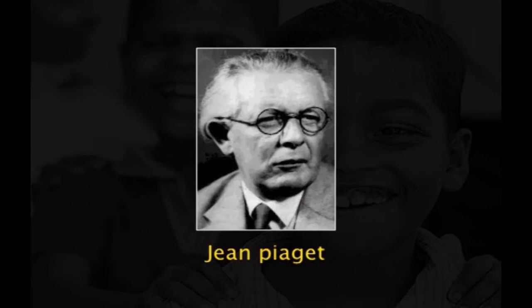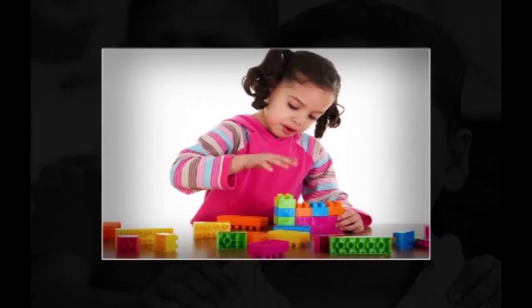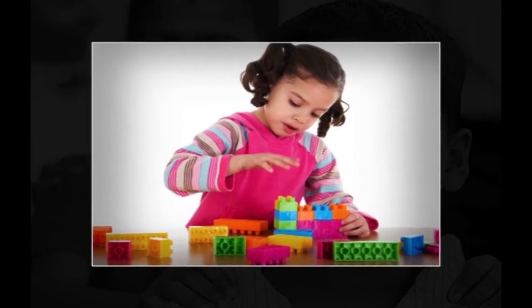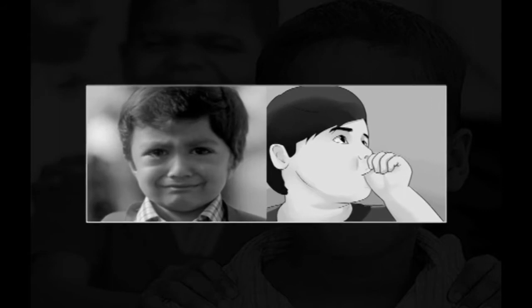The Swiss biologist and psychologist Jean Piaget is renowned for constructing a highly influential model of child development and learning. Piaget's theory is based on the idea that the developing child builds cognitive structures — also called mental maps, schemas, or networked concepts — for understanding and responding to physical experiences within his or her environment. Piaget further attests that a child's cognitive structure increases in sophistication with development, moving from a few innate reflexes such as crying and sucking to highly complex mental activities.